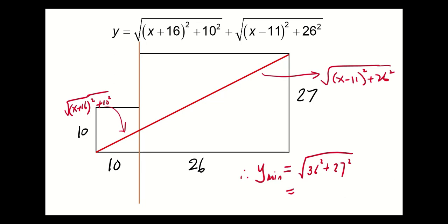Since both 36 and 27 have a common factor of 9, this equals 9 × √(4² + 3²), which equals 45. And 45 indeed is the minimum value of y.